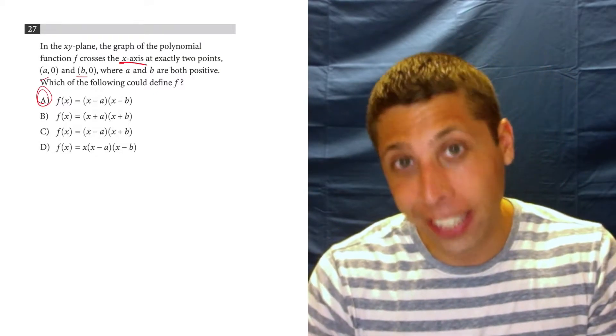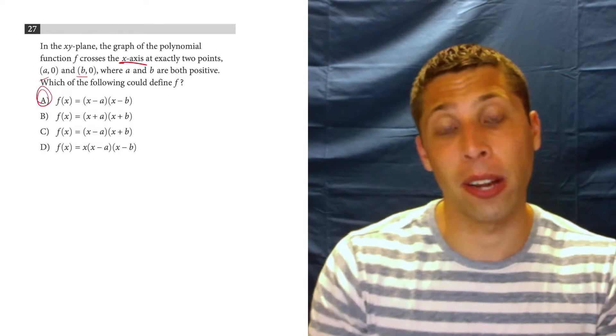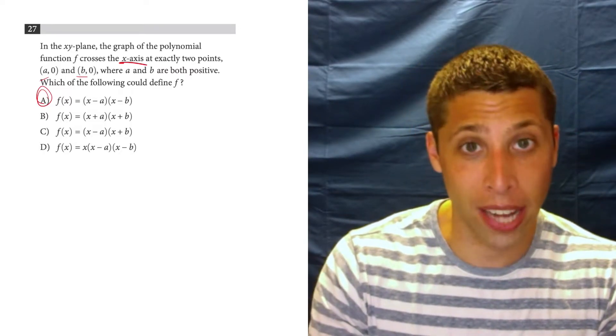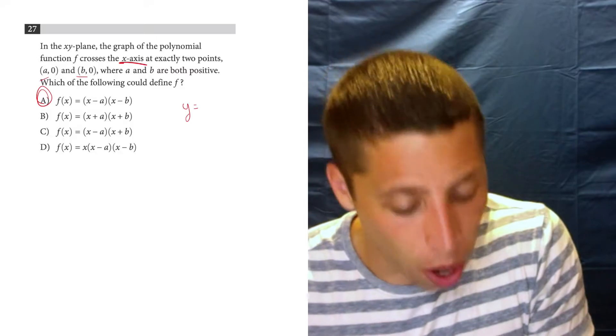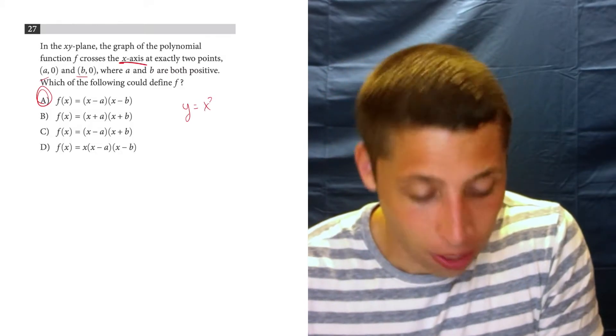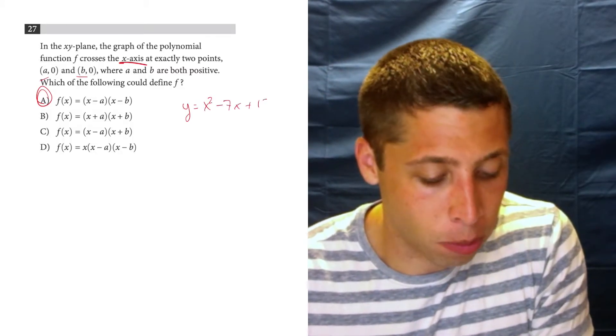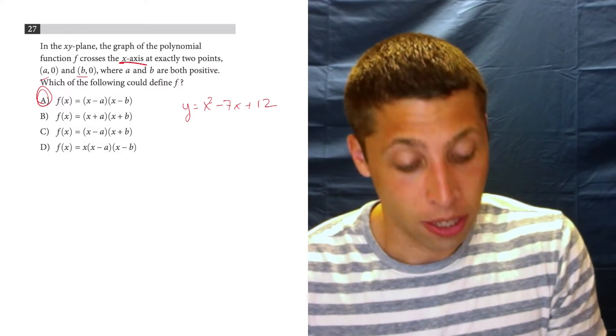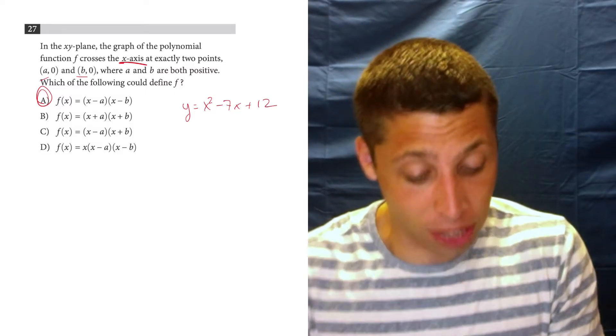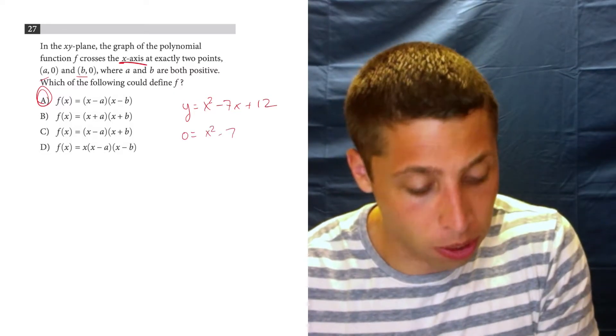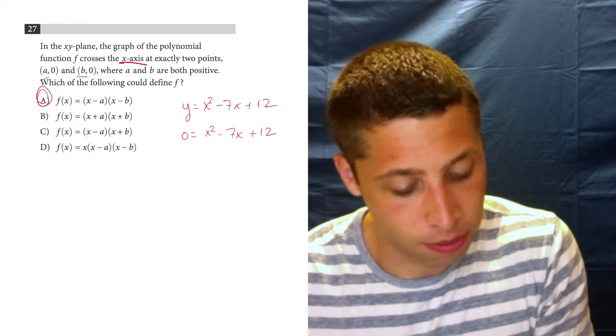Now, I could explain how factors work and all that stuff, but hopefully you just know that from doing quadratics. If we have something like y equals x squared minus 7x plus 12, if we wanted to find the x-intercepts, we would set y equal to 0 and factor.